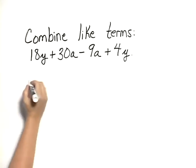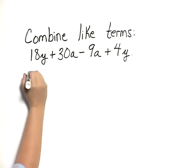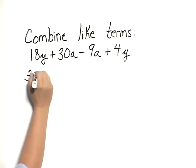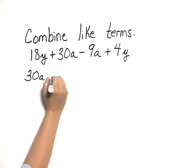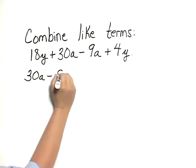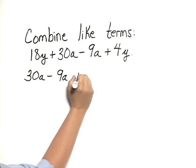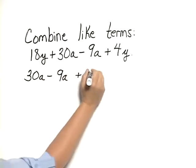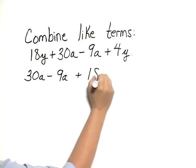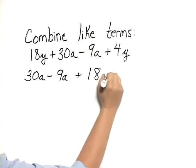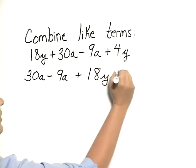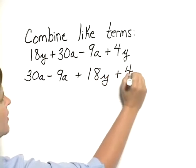So we can begin by writing those together. We can write this as 30a minus 9a plus 18y plus 4y.